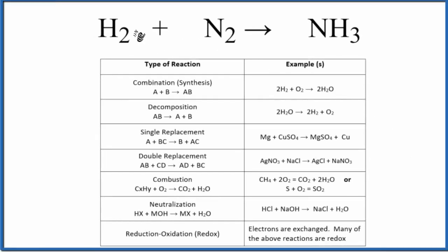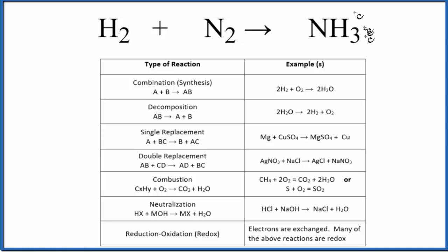In this video we'll take a look at the type of reaction for H₂ plus N₂ yields NH₃ — that's hydrogen gas plus nitrogen gas gives us ammonia. This is the common name ammonia, and it's a very common chemical, so it's good to know. You could also call it nitrogen trihydride.